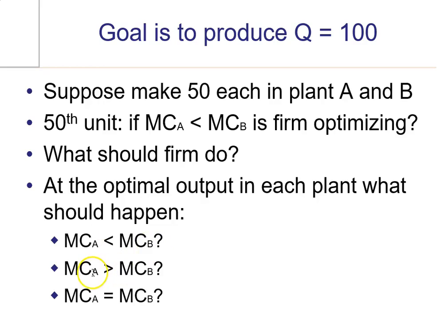Well, what happens in the second scenario where the marginal cost in plant A is larger than the marginal cost in plant B? Well, just flip the script here. Produce another one in the B plant and one less in the A plant.